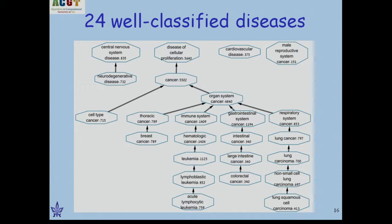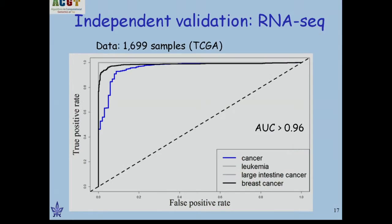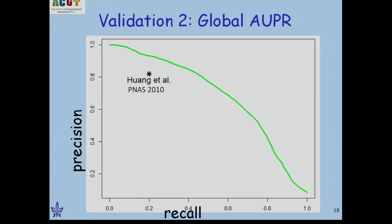Here are the 24 well-classified diseases. By far the majority are from cancer, but there are also some well-classified cases in neurodegenerative diseases and cardiovascular. We also did independent validation by taking classifiers trained on microarray data and testing them on RNA-seq samples — the AUC scores were extremely high. Note that with the exception of breast cancer there are no negatives, so these are positive versus the rest of the cancers. The global AUPR is also greatly improved over a PNAS paper used as comparison.